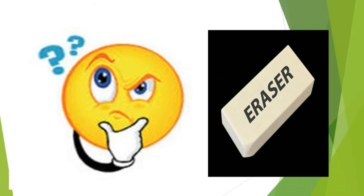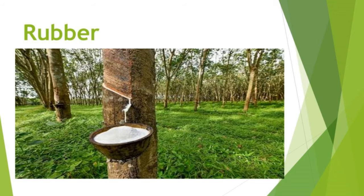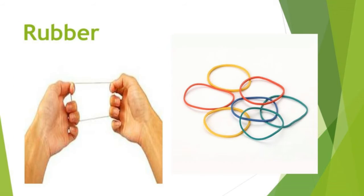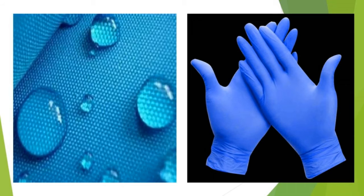Do you ever think about what material your eraser is made of? Let's find out. Rubber is made from sap — the milky substance of the rubber tree. Rubber is elastic, meaning it comes back to its original shape after being stretched, so rubber bands are made from it. It is also waterproof, meaning it does not allow water to enter inside, so hand gloves are made from it.